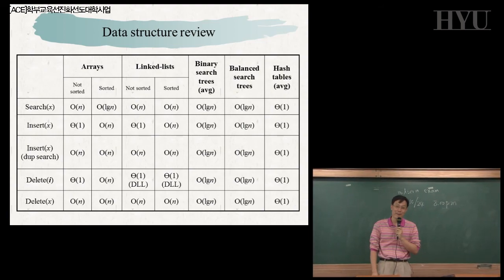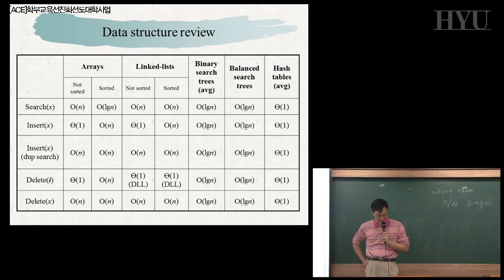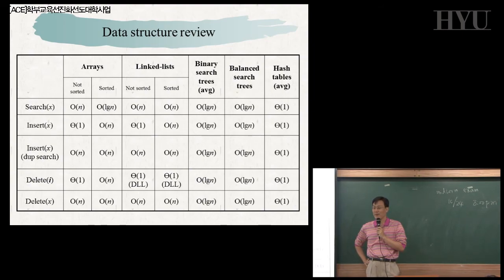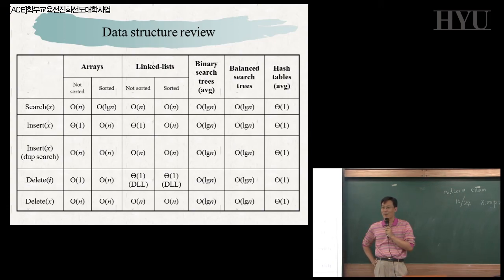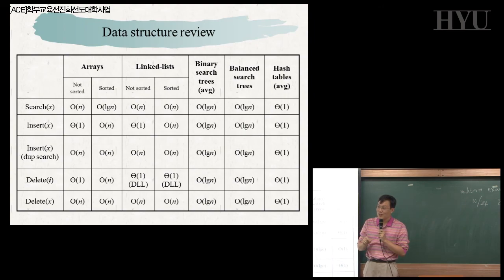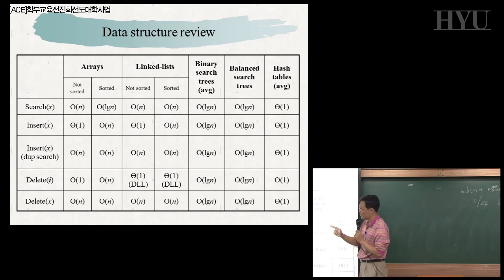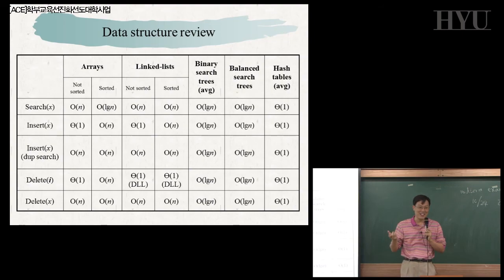Can you explain how deletion is done in constant time for an unsorted array? Just delete it — there is an empty entry. If it is empty, take the last element and move it to the empty spot. Then we have a consecutive array and we're done. So it's very interesting: if it is unsorted, deletion can be done in constant time.